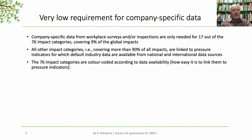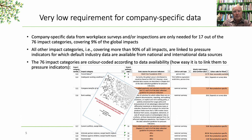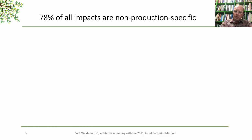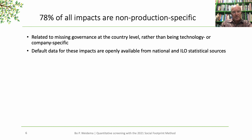The 76 impact categories are color-coded according to data availability, that is, how easy it is to link them to pressure indicators. There is also a data collection guideline which tells you more about how each specific indicator should be calculated. Most importantly, we have confirmed that about 80% of all impacts — more precisely 78% — are non-production-specific. What we mean by that is that they are related to missing governance at the country level, rather than being technology or company-specific.